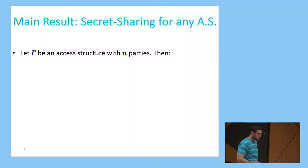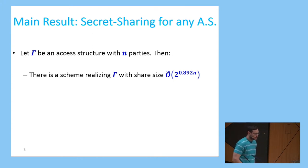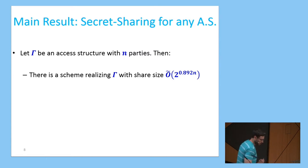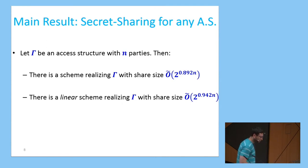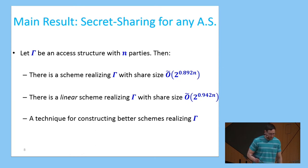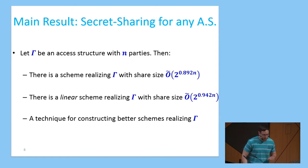Our main result is a secret sharing scheme realizing any access structure. For any access structure gamma over a set of N parties, we show a non-linear secret sharing scheme realizing gamma with share size O(2^{0.892N}). We also show a linear scheme realizing gamma with share size O(2^{0.942N}). To construct these schemes, we developed a general technique that enables us to construct better secret sharing schemes realizing any access structure.